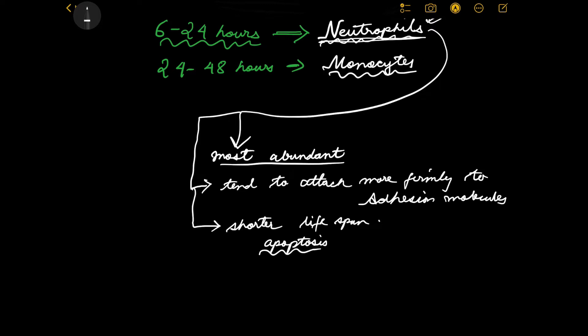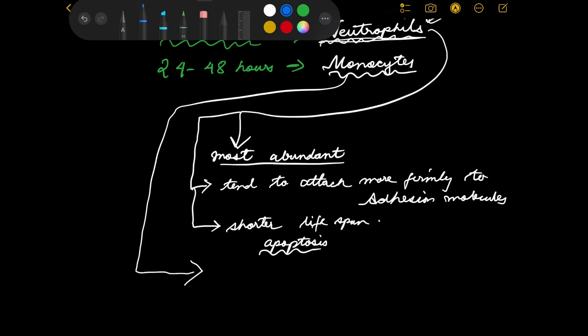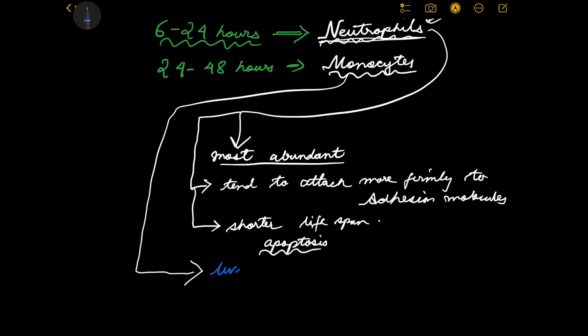In sharp contrast, monocytes live longer. Because they live longer, they also respond a little later - they have time to respond. Neutrophils are always in a hurry because they die within 24 to 48 hours with their short lifespan, so they have to make the most out of it.